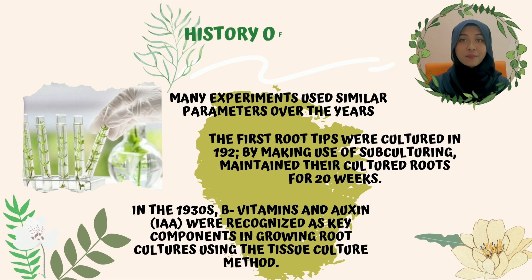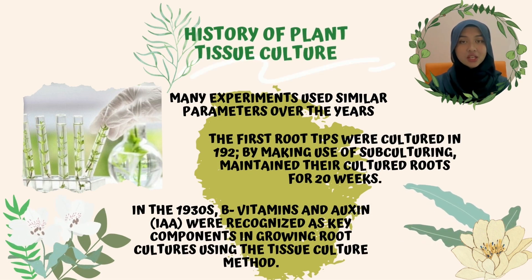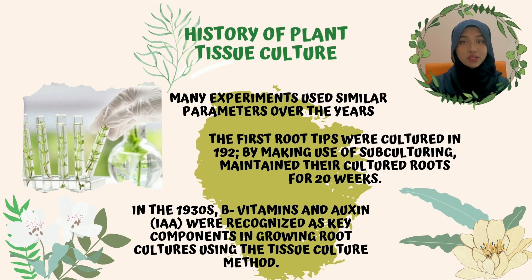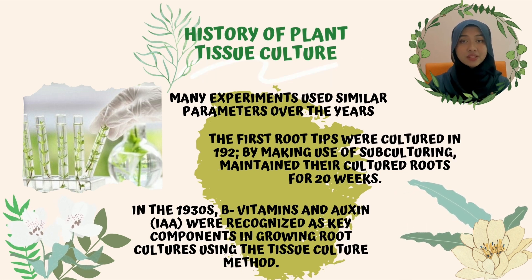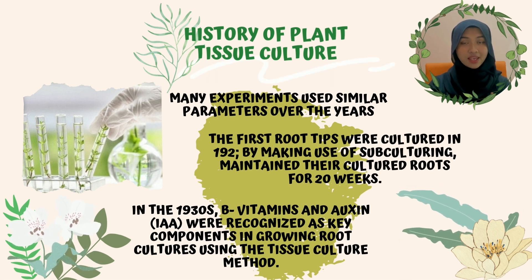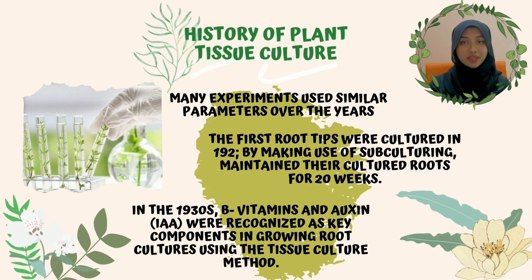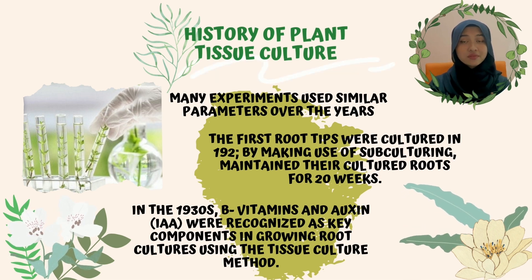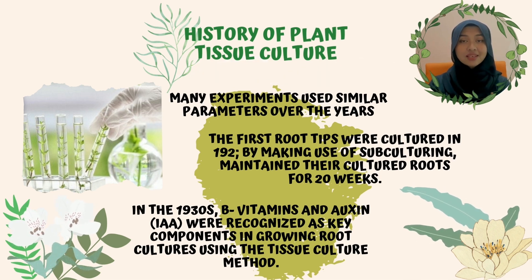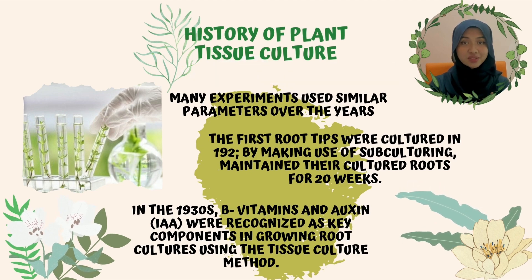In 1922, by making use of subculturing, researchers had maintained their cultured roots for a full 20 weeks. Then in the 1930s, B vitamins and auxin (IAA) were recognised as key components in growing root cultures using the tissue culture method. Since then, researchers began identifying the most important parameters that have now become our guides for tissue culture today.